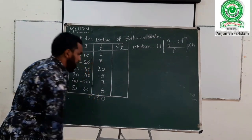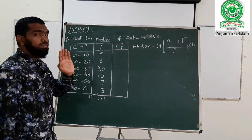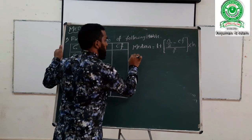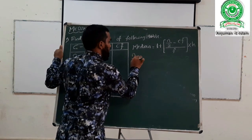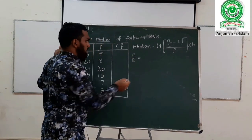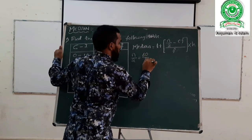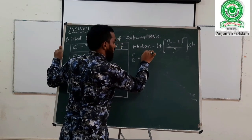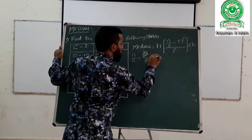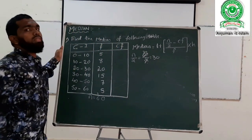The total sum of all frequencies equals N. That is N equals 60. Now we need to find N by 2. We divide 60 by 2, which gives us 30. So N by 2 equals 30.